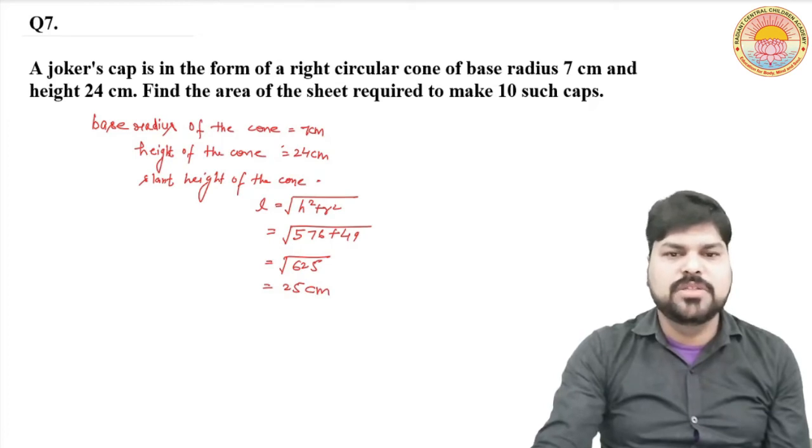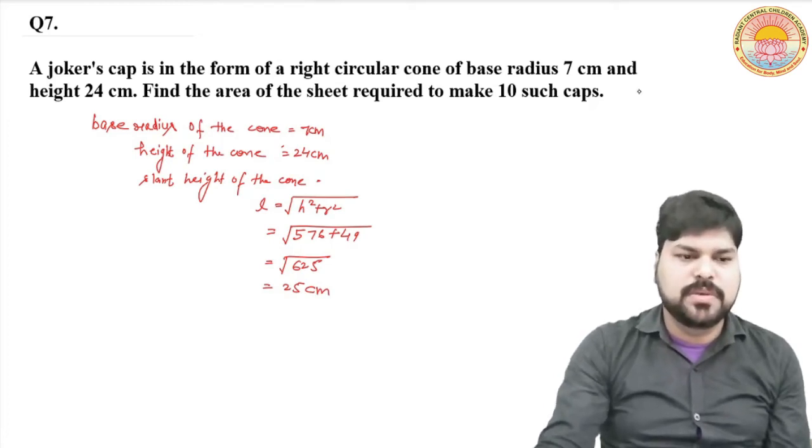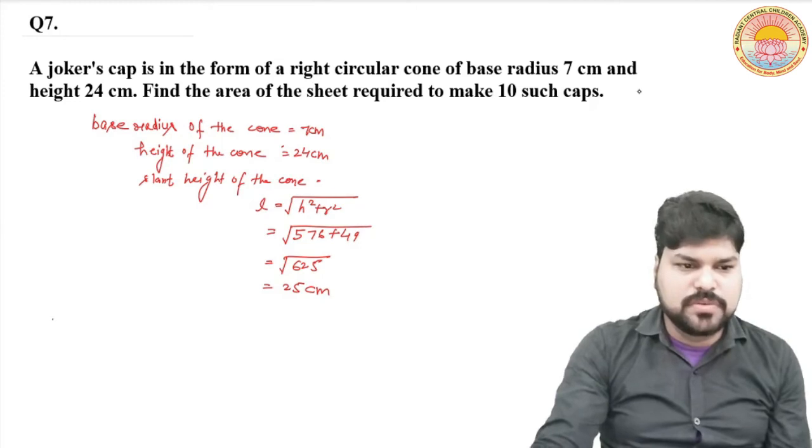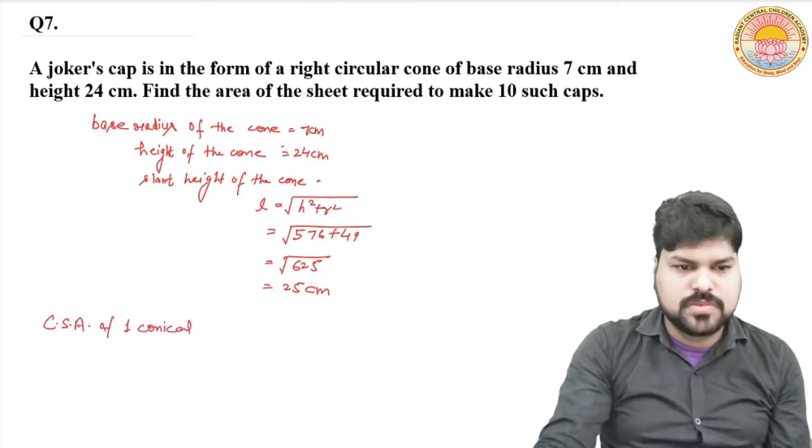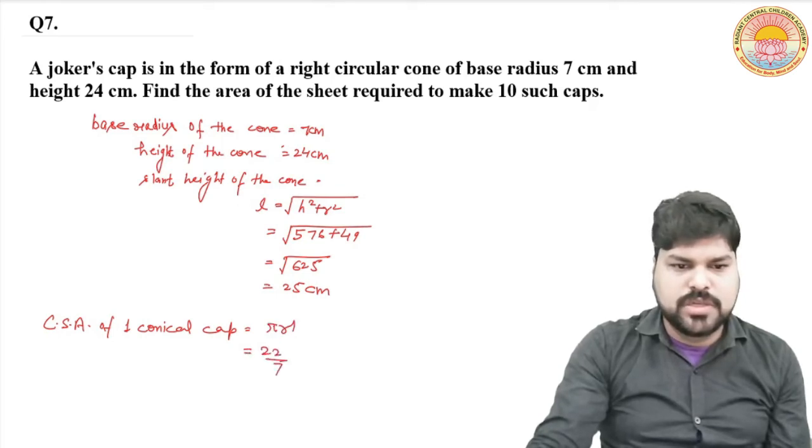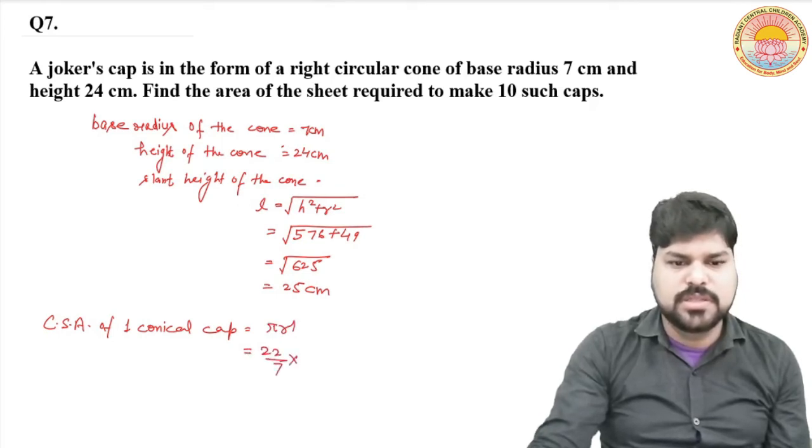To find area of the sheet required to make such 10 caps, सबसे पहले हम देखते हैं CSA of 1 conical cap. CSA equal to pi r l, which is 22 by 7 into radius 7 into l 25.